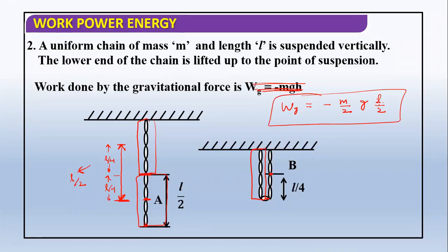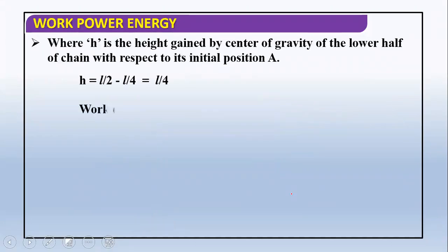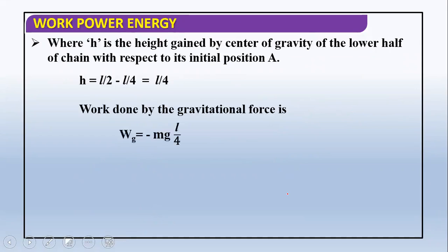The upper part is as it is — no change. So only the lower part is lifted. The lower part has mass m by 2 and its center shifts by l by 2, so it is lifted by height l by 2. Therefore work done equals mg × l by 4. That is the explanation — the height changes by l by 2.